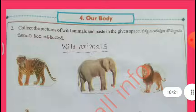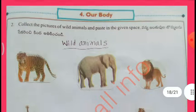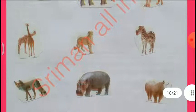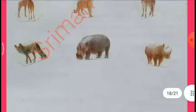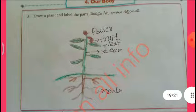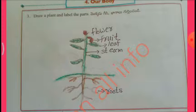Collect the pictures of wild animals and paste them in the given space. Draw a plant and label the parts: Flower, Fruit, Leaf, Stem, Roots.